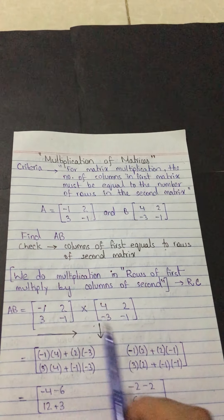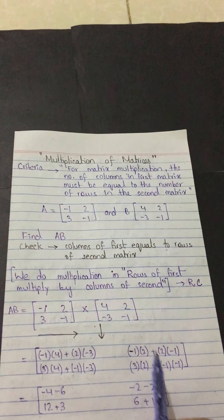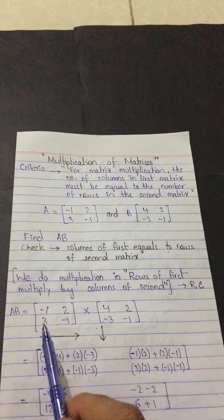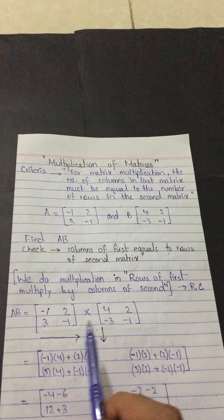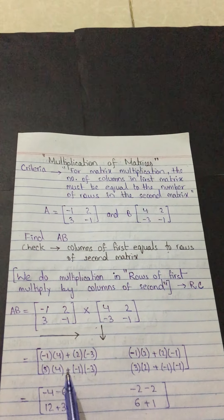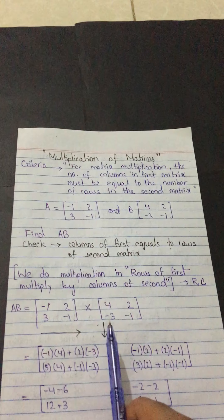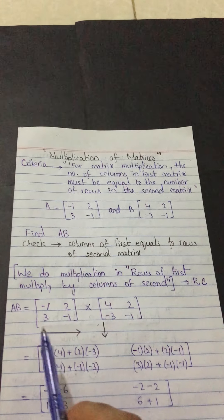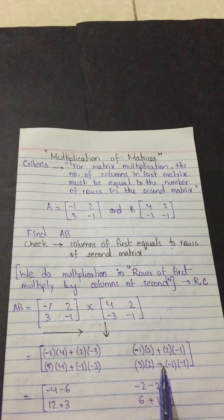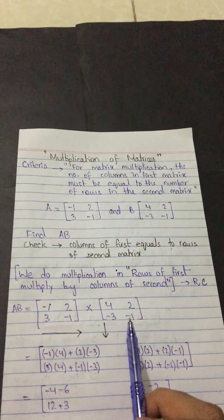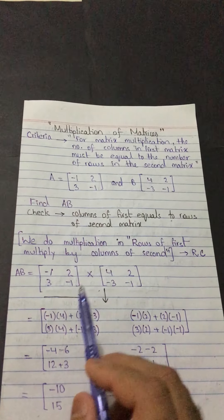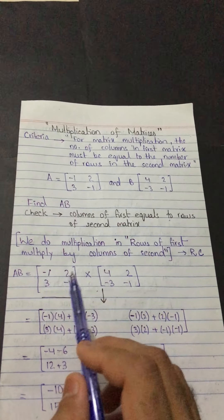Computing each element: first element — (−1 × 4) + (2 × −3). Second element — (−1 × 2) + (2 × −1). Third element — (3 × 4) + (−1 × −3). Fourth element — (3 × 2) + (−1 × −1).